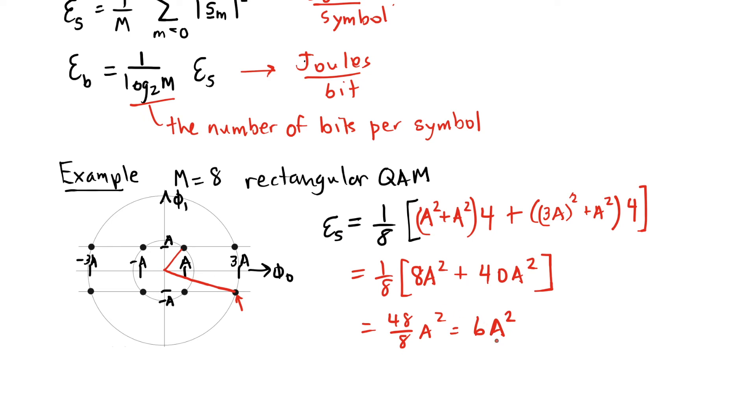The average energy per symbol becomes 6a squared. And the average energy per bit then becomes 6a squared divided by log base 2 of 8, which is 3, so I get 2a squared.